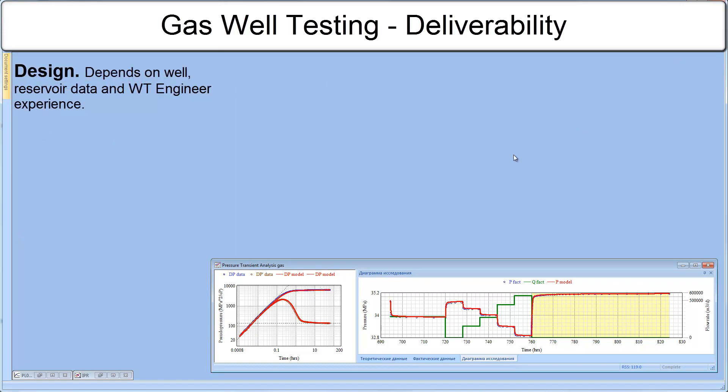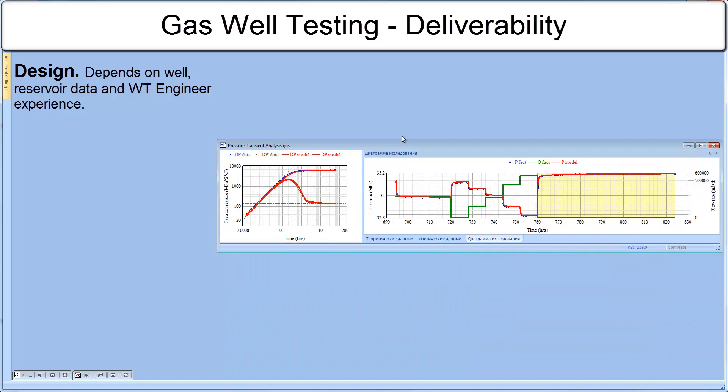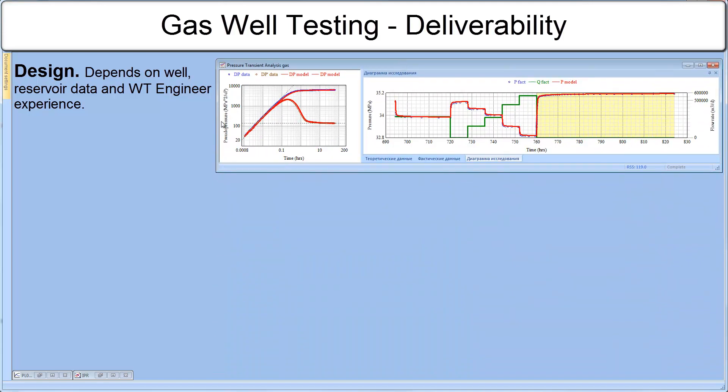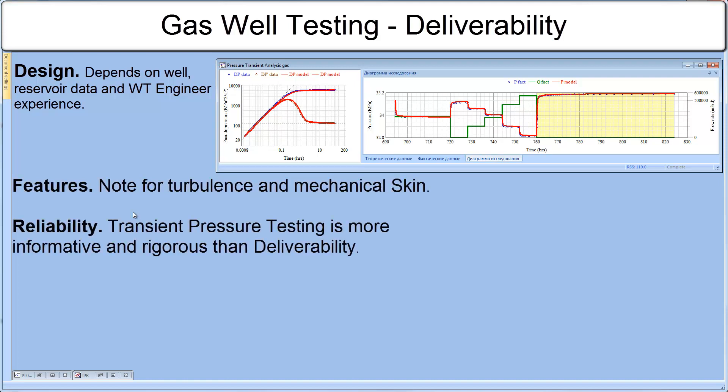Finally, I would like to stress a few important points about gas well testing. The choice of well test design greatly depends on well, reservoir data and well test engineer experience. During data interpretation note for turbulence and mechanical skin. It is very important. And reliability. Transient is better than deliverability. Wellhead pressure versus flow rate deliverability is a cheap alternative. That's it for gas well test. Thank you and keep watching my videos.